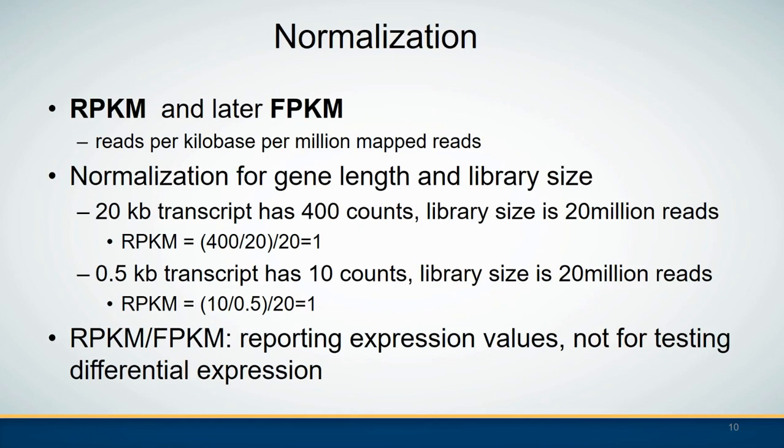In order to account for those complexities related to using simple read counts, a normalization process is always suggested. People use RPKM and later FPKM to do normalization — they are essentially the same, calculating reads per kilobase per million mapped reads. However, there are problems in using those normalization methods.